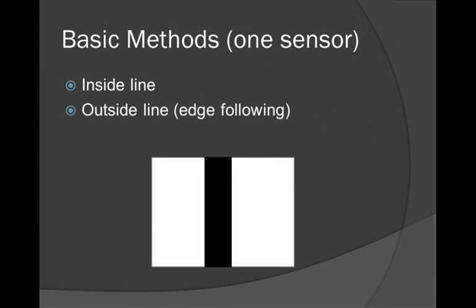So first, what are the basic methods that you can use with one sensor to follow a line? Well, essentially, there's two basic ways or two common ways to follow this. The first is the intuitive way. You start inside the line and you just make sure you stay inside of it.